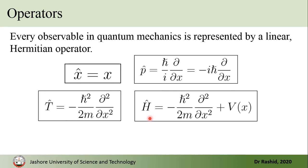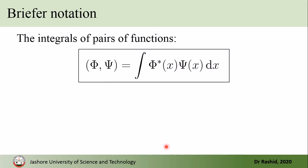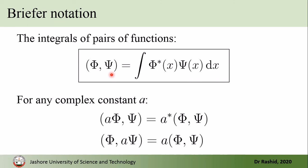In quantum mechanics there are many more operators. When the operator acts on the wave function it gives us the observable or the eigenvalues. We use this bracket notation, where the integral of two functions is written with this compact notation.